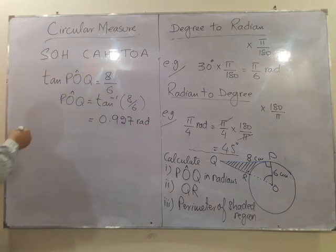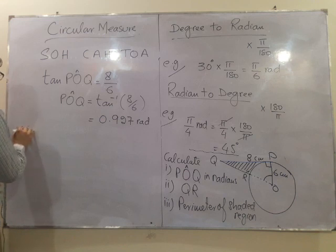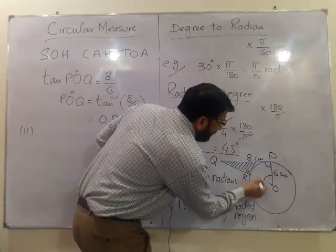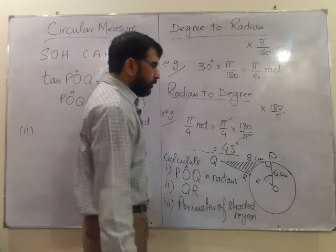Now they are asking us in the second part to calculate the length of QR. For finding the length of QR, it is quite obvious that this length OR is radius which is 6. So if we are able to find out OQ, by subtracting 6 from OQ, we will be able to get the value of QR.